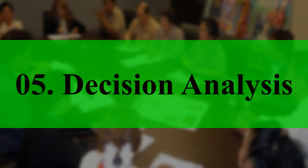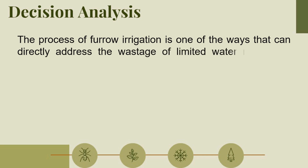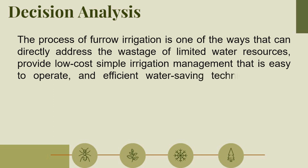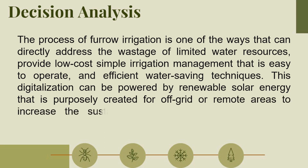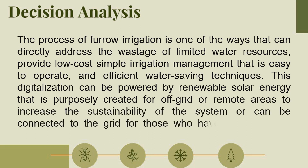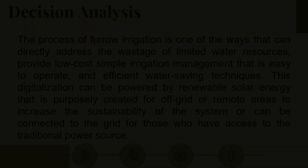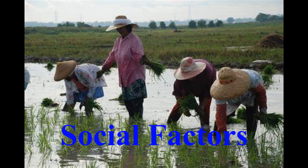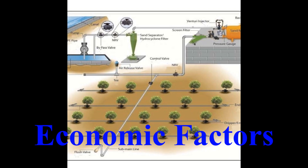On decision analysis, the process of furrow irrigation is one of the ways that can directly address the wastage of limited water resources, provide low-cost simple irrigation management that is easy to operate, and employ efficient water-saving techniques. This digitalization can be powered by renewable solar energy, purposely created for off-grid or remote areas to increase the sustainability of the system, or can be connected to the grid for those who have access to traditional power sources. The external factors that can influence the acceptance of AFIS are the social factors, technological factors, and economic factors.